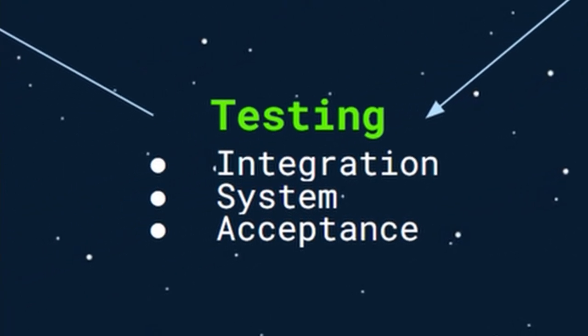For the testing phase, there are three stages: integration testing, system testing, and acceptance testing. This testing is a level of advanced testing done in a special environment to avoid outside disturbances. Integration testing focuses on the interfaces of the system — for example, how the login page links with the home page.